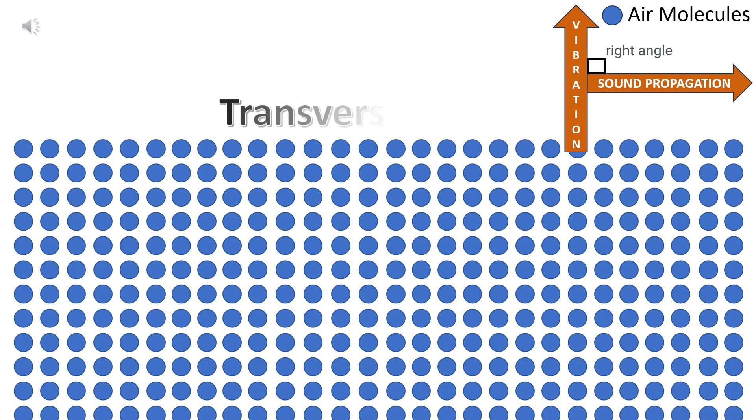First let's talk about how sound waves propagate. There are two types of sound waves, transverse and longitudinal.